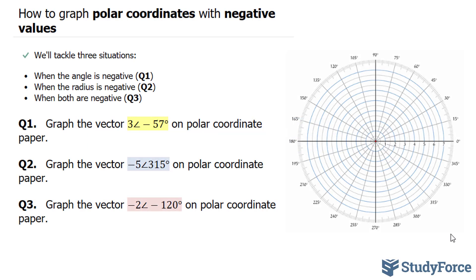In this lesson, I'll show you how to graph polar coordinates with negative values. We'll tackle three situations: when the angle is negative, when the radius is negative, and when both radius and angle are negative.